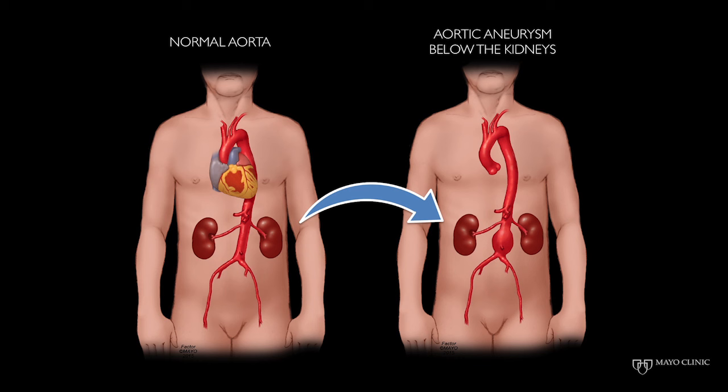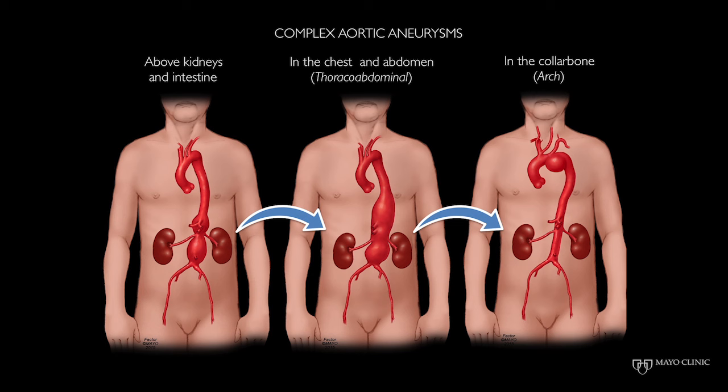What is an aortic aneurysm? The normal aorta measures the size of a quarter. Aortic aneurysm is a weakness of the aorta, which leads to progressive enlargement and dilatation. Whereas most aortic aneurysms occur in the abdominal aorta below the kidneys, they can also affect the aorta across the arch, the arteries to the kidneys and intestine, the thoracic aorta in the chest, or even the aortic arch near the collarbone.